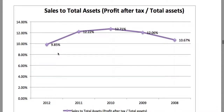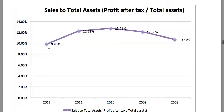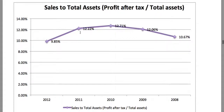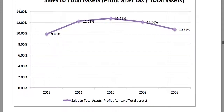Considering the sales to total assets, which provides an idea about the company's revenue in relation to the total asset position, we'll see that it had somewhat of an improvement up to 2010 and has since started to reduce — to worsen, shall I say. It was 12.22 percent in 2011 and now it's 9.85 percent in 2012.